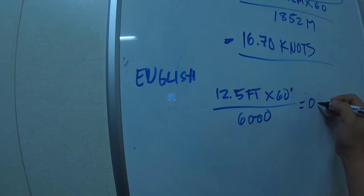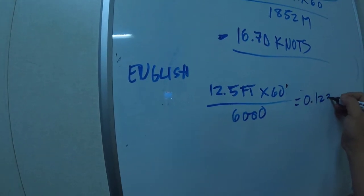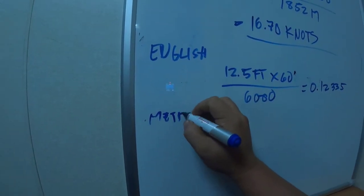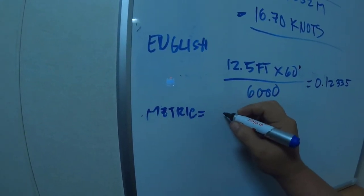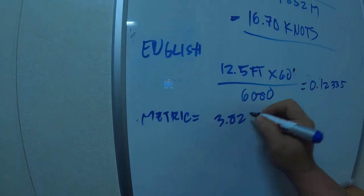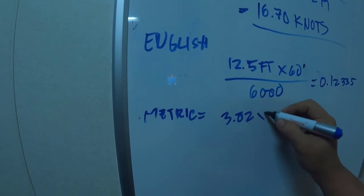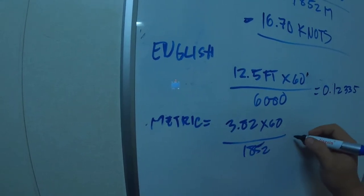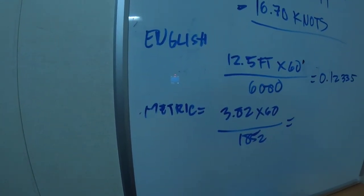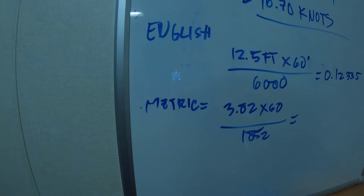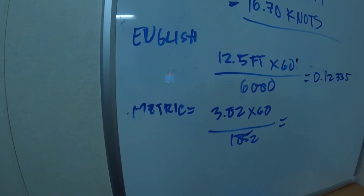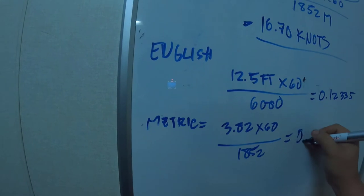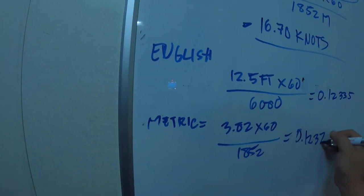Then in the metric system, it equals 3.82 times 60 divided by 1852, which gives us 0.1237. So they're the same.